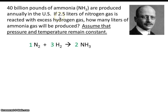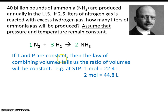If 2.5 liters of nitrogen gas — that's this stuff — react with excess hydrogen, so we're going to have extra hydrogen and we don't even need to worry about hydrogen — how many liters of ammonia can be produced? This will actually be a fairly straightforward problem, because pressure and temperature are remaining constant. If temperature and pressure are constant, then the law of combining volumes tells us the ratio of volumes will be constant. You already know at STP that 1 mole occupies 22.4 liters of space. Now, if we don't change the temperature and pressure, it stands to reason that 2 moles would take up exactly twice as much volume. So if we're not changing the temperature and pressure, what we can do is just treat these coefficients almost as if they're volumes.